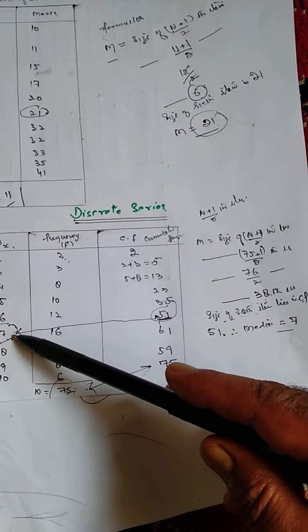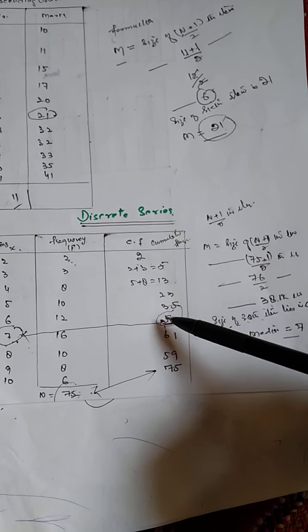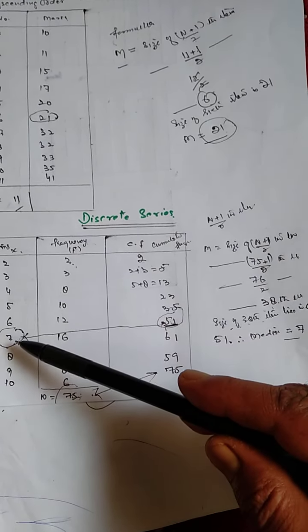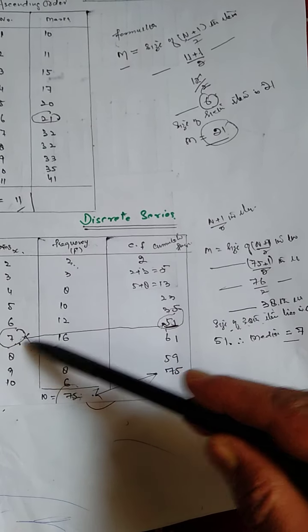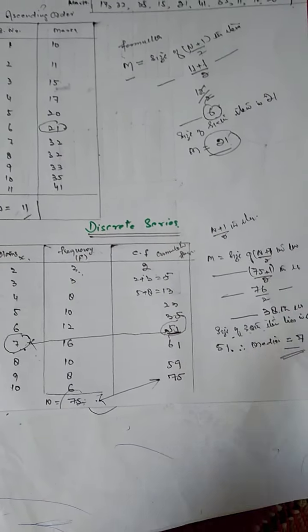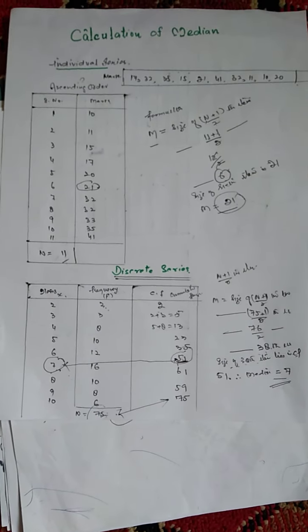That will be your median. Here 38th item exists in 51, so 51, the corresponding item is 7, so 7 is the median. This is how we calculate median for a discrete series.